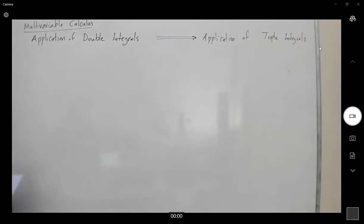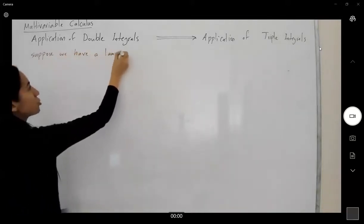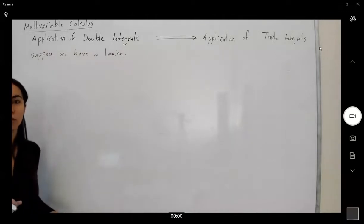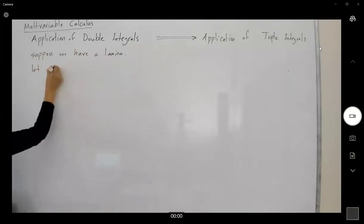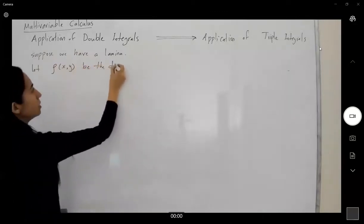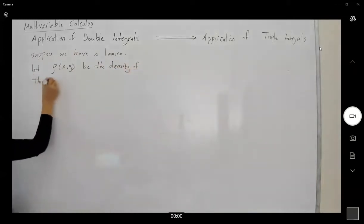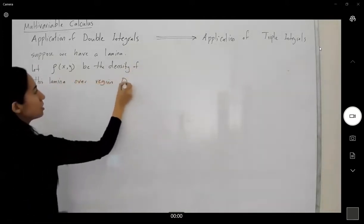Suppose you have a lamina, or it's just a thin layer. And suppose you have the density of this lamina and it's a continuous function over D. Let rho(x,y) be the density of this lamina over region D.